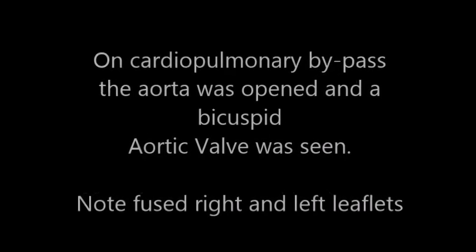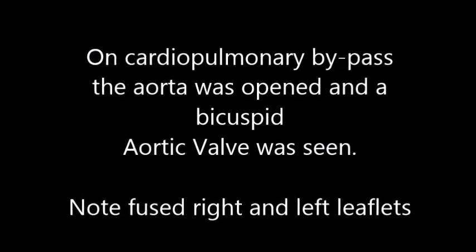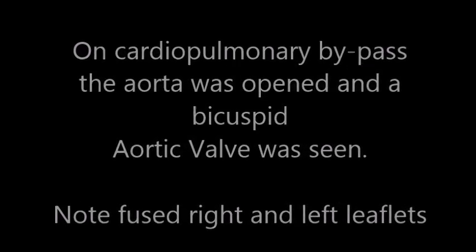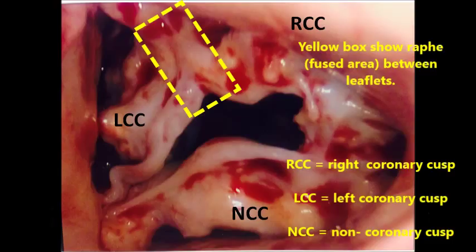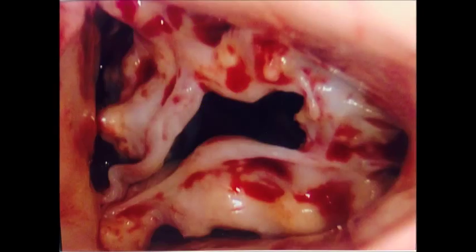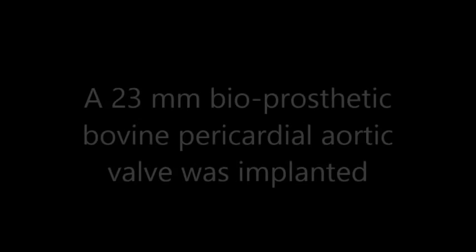On cardiopulmonary bypass, the aorta was opened and a bicuspid aortic valve was confirmed. Note the fused left coronary cusp and right coronary cusp highlighted in the yellow box. Restricted closing of the valve was also causing severe aortic insufficiency.